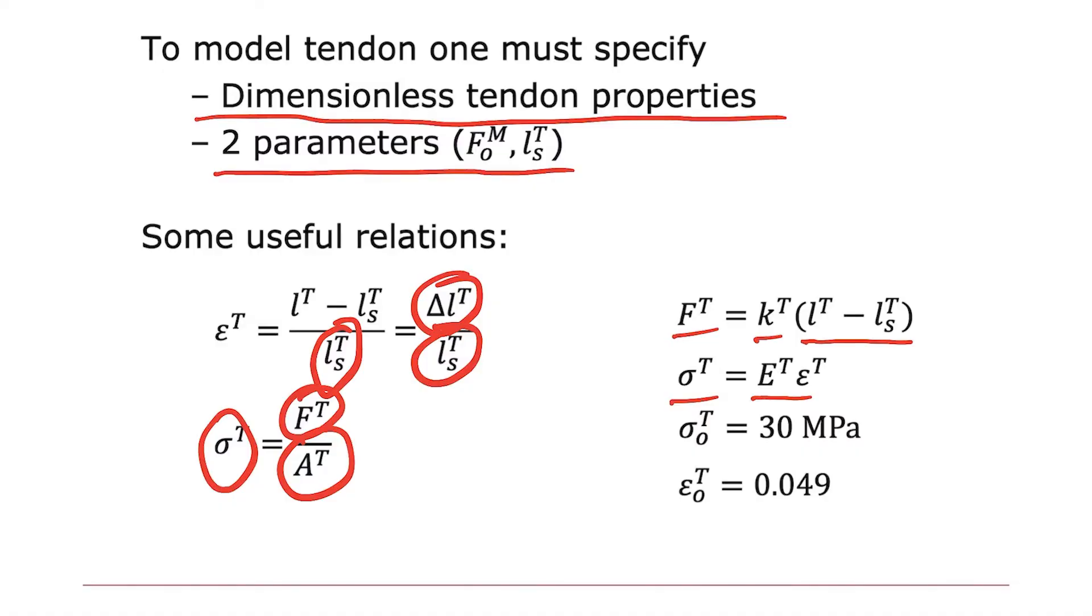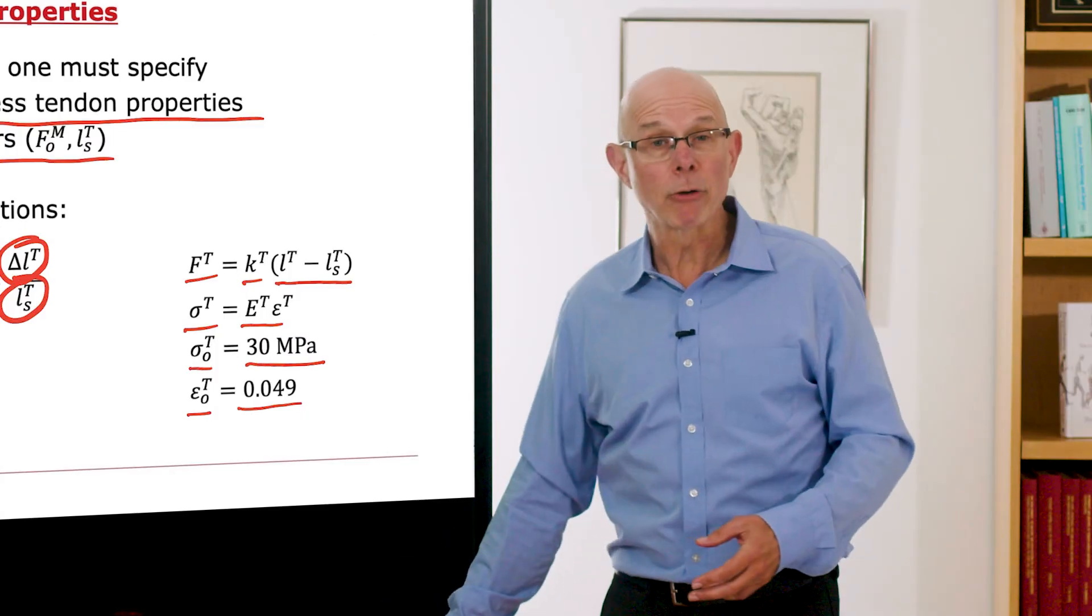And we use these parameters as just defaults when we're making calculations. That is, the stress in tendon, when the muscle is developing its maximum force, we're going to assume is 30 megapascals. That lets you scale the muscle and tendon together. And the strain in tendon when muscle is developing its maximum force is about 0.05, so about 5%.